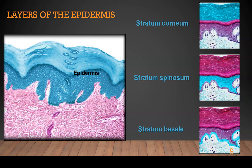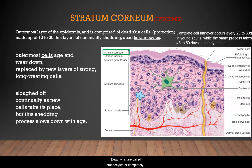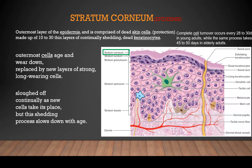The stratum corneum is the very top, outermost layer of the epidermis, comprised of dead skin cells for protection. It's made up of 10 to 30 thin layers of continually shedding dead keratinocytes, or completely keratinized cells. The outermost cells age, wear down, and get replaced by new layers that are continually sloughed off. This shedding process slows with age — complete cell turnover occurs every 28 to 30 days in young adults and 45 to 50 days in elderly adults.